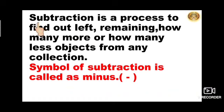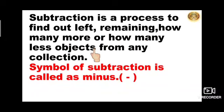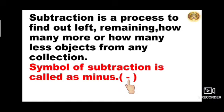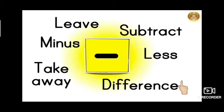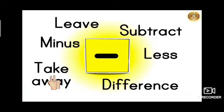So what did we understand children? Subtraction is a process to find out the left or remaining, or how many more or how many less objects from any collection or any number of things. The symbol of subtraction is called minus. These are some keywords to understand that we have to solve subtraction: minus, take away, difference, or less. These are some keywords of subtraction.